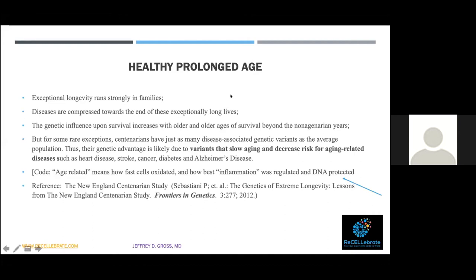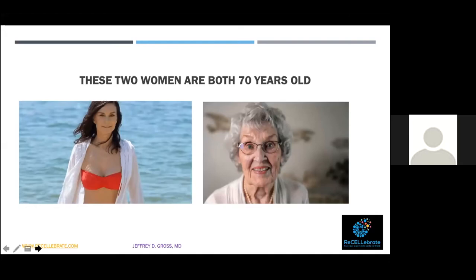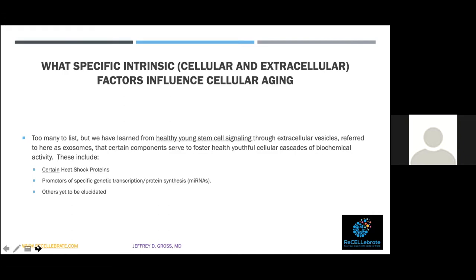Genetic influence on survival increases with older ages of survival beyond nonagenarians. Yet for some rare examples, centenarians have just as many disease-associated genetic variants as the average population — so how do they do well? They protect their DNA. Age-related disease means how fast cells are oxidized and how much inflammation is occurring — age is really an accumulation of oxidation and inflammation. Consider two women who are both 70 years old but look very different — their cells have aged at different rates.